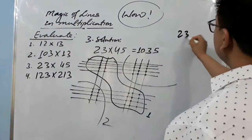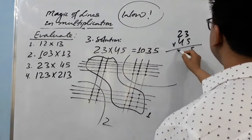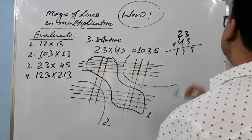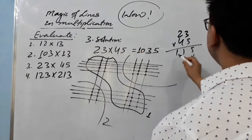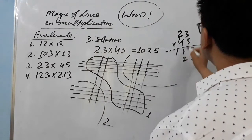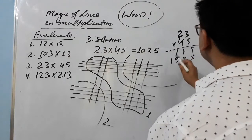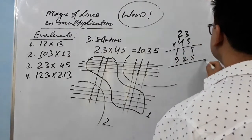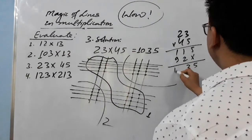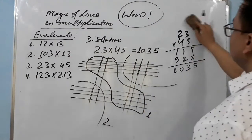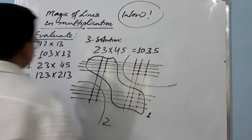Let me verify 23 times 45 using traditional multiplication: five threes are 15, five twos are 10 — so 11; four threes are 12, four twos are 8. Working it out: we get 1035. Same result! So we confirmed 23 times 45 equals 1035.